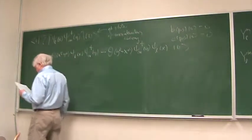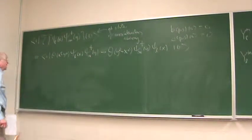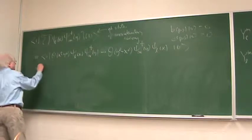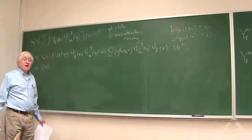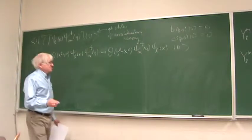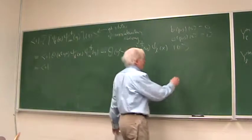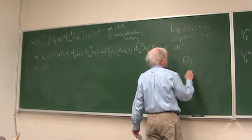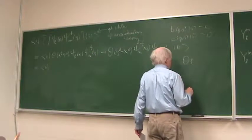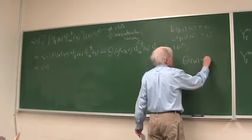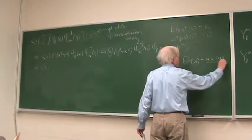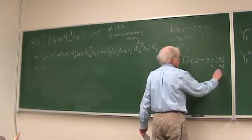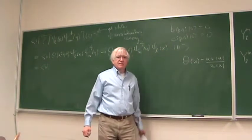What is the theta function? Theta of u is (u + |u|) / (2|u|) — this is the Heaviside function.